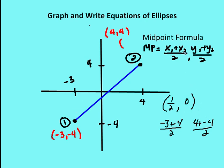The midpoint takes the average of the x values and the average of the y values, and that gives me the coordinate for the midpoint.